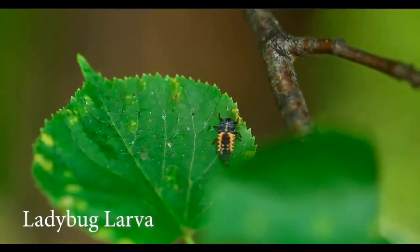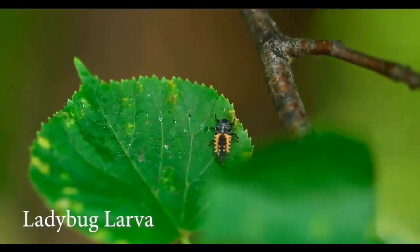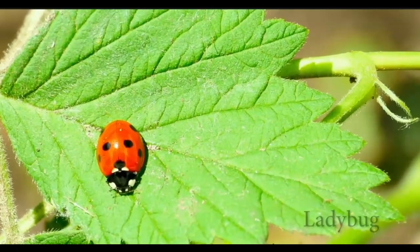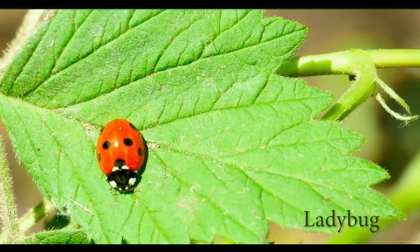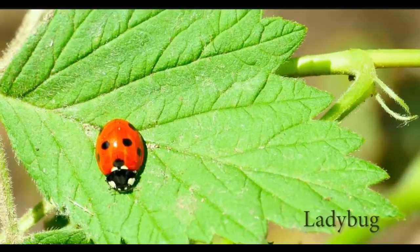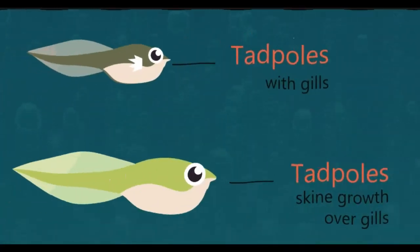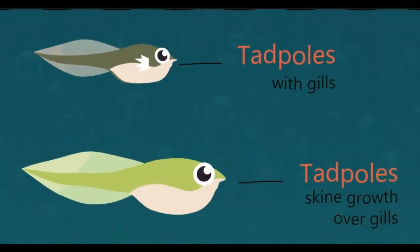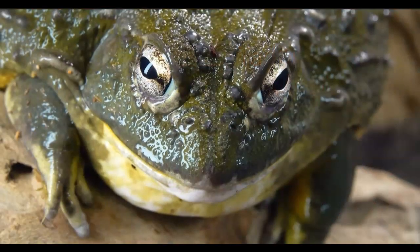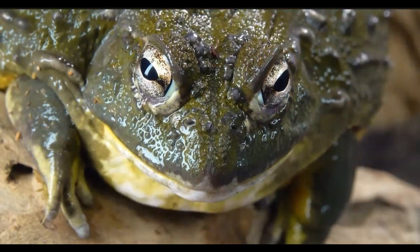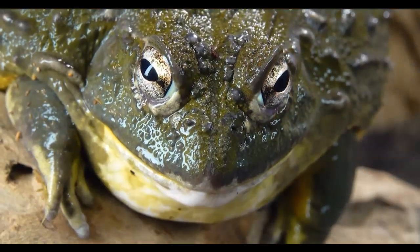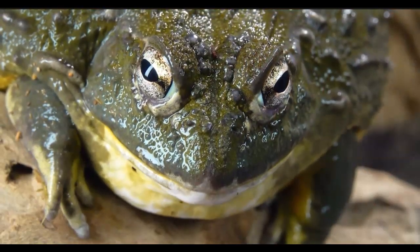Some adaptations change over time depending on the needs of the animal. For example, a frog starts out with gills so they can live in water, which eventually turn into lungs so they can live on land.